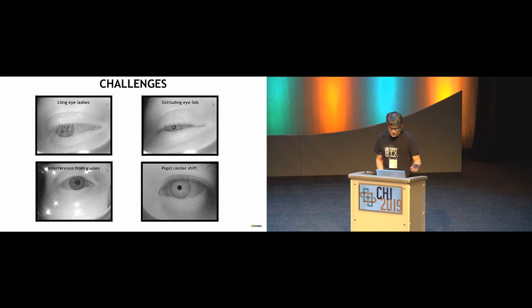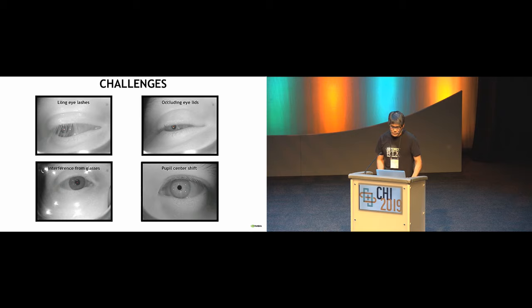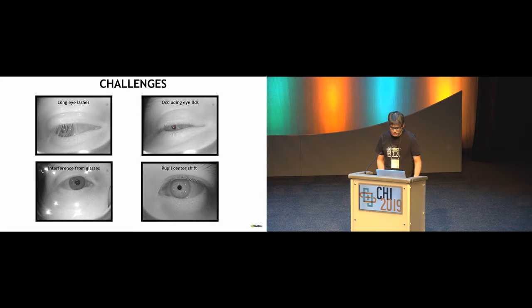We thought maybe this is something a neural network can do well, because we know it's accurate and robust for certain image processing problems. But we need data that's large and covers all the variations. We noticed that we are interested in a specific configuration — the near-eye configuration using infrared light — and it looked like we needed to create datasets ourselves.